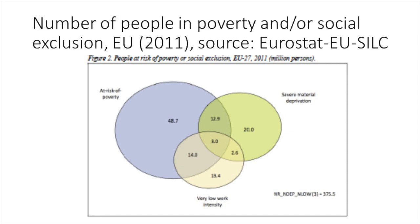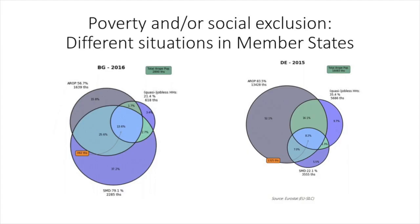This was the situation at EU level for the whole of the EU. However, the weight of the different indicators in defining the population at risk of poverty or social exclusion can differ significantly between Member States, depending on the state of economic development of the Member State, the functioning of the labour market, the income distribution and the adequacy of social protection. The following slide shows two examples: in Bulgaria, the biggest group are the severely materially deprived, while in Germany, the biggest group are the income poor.